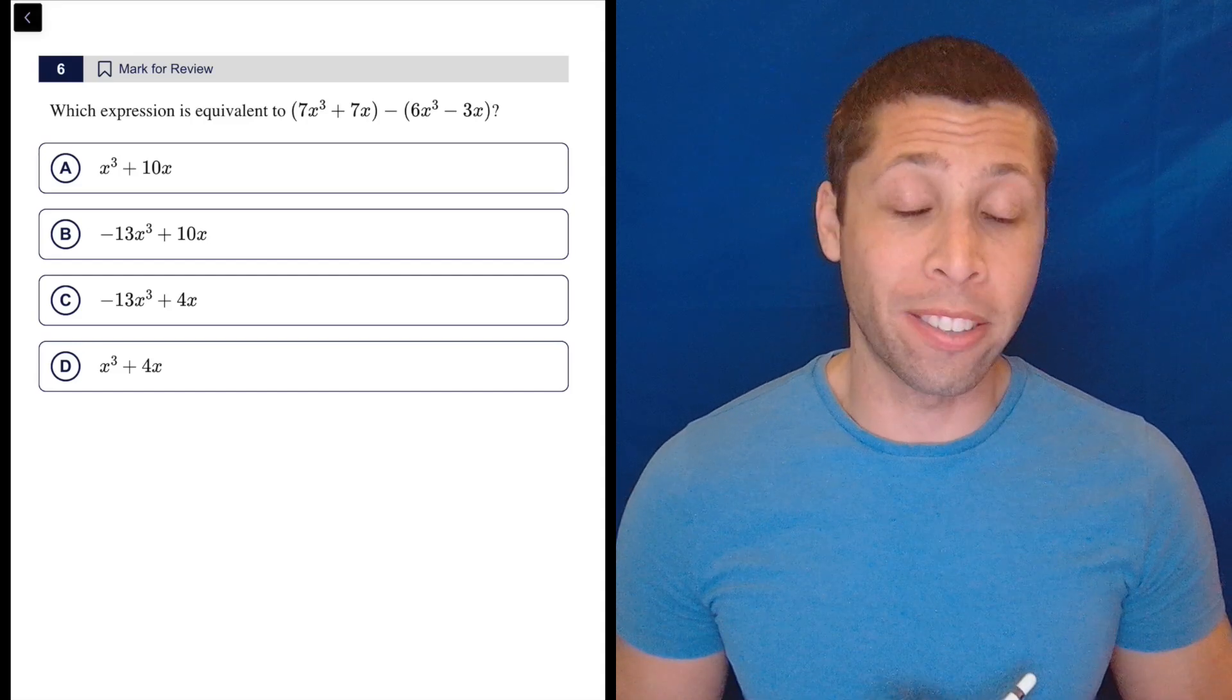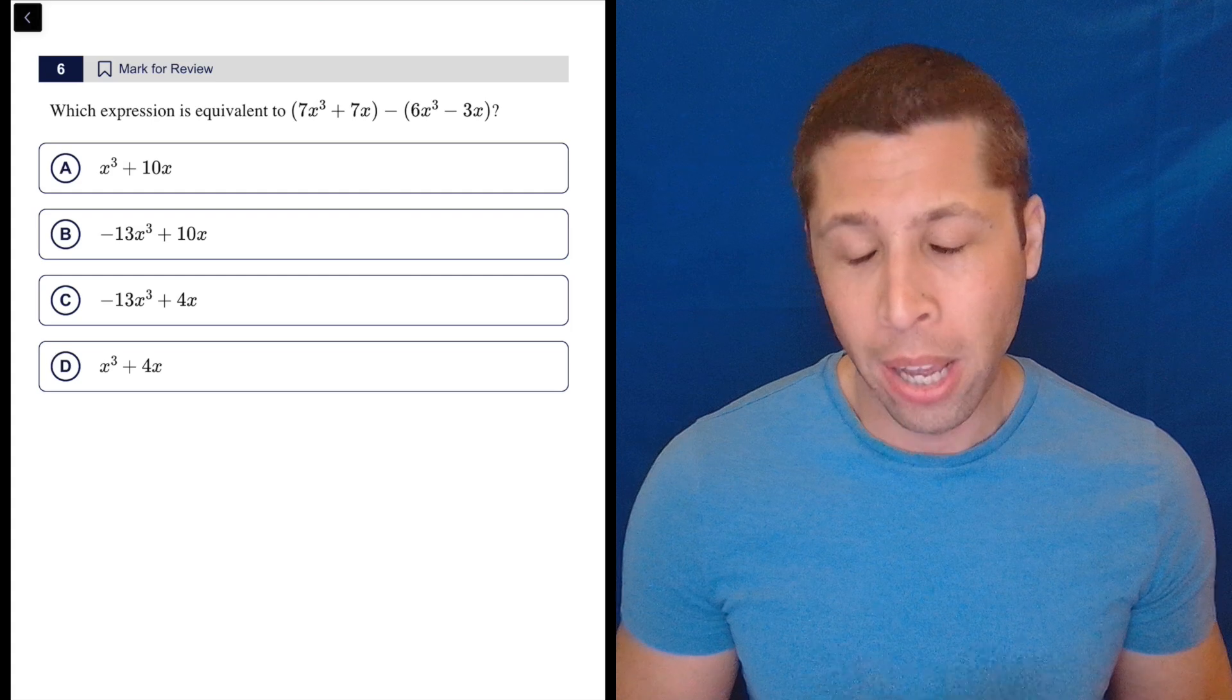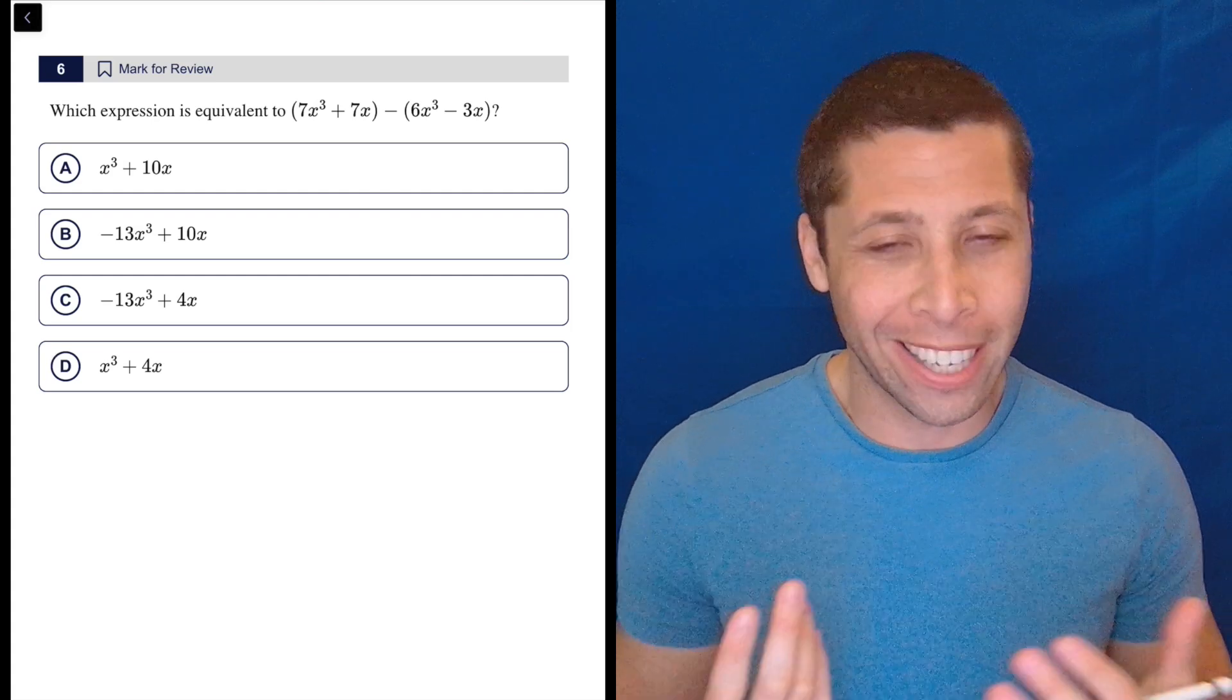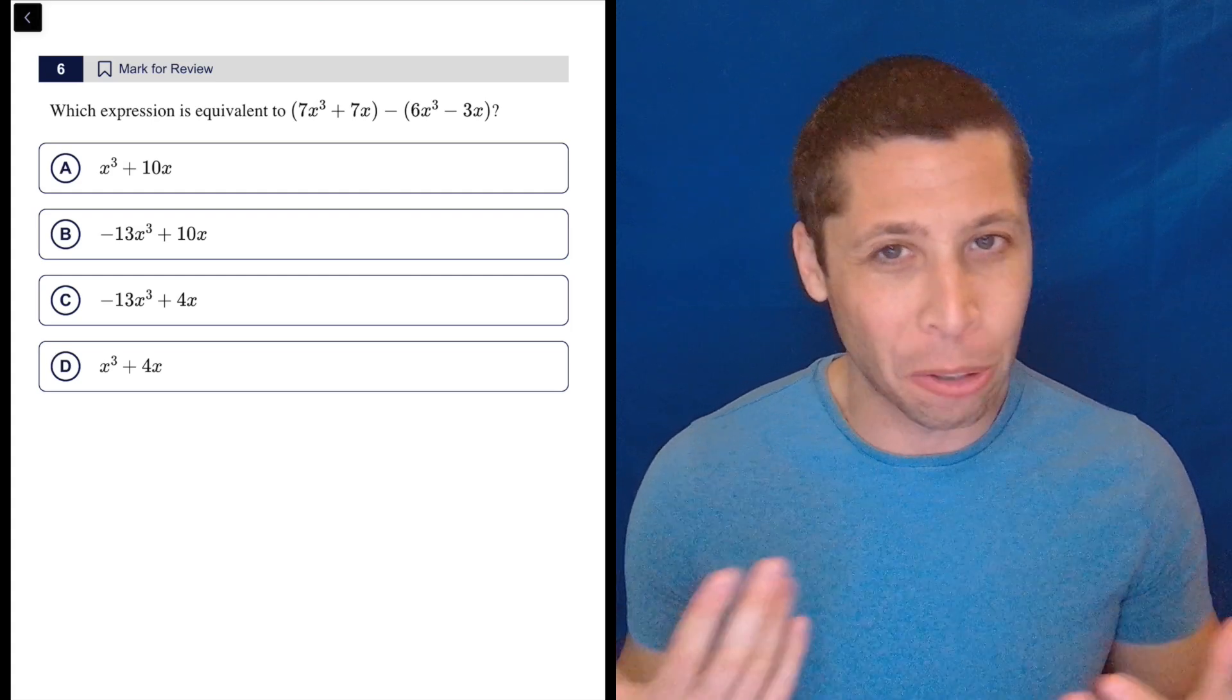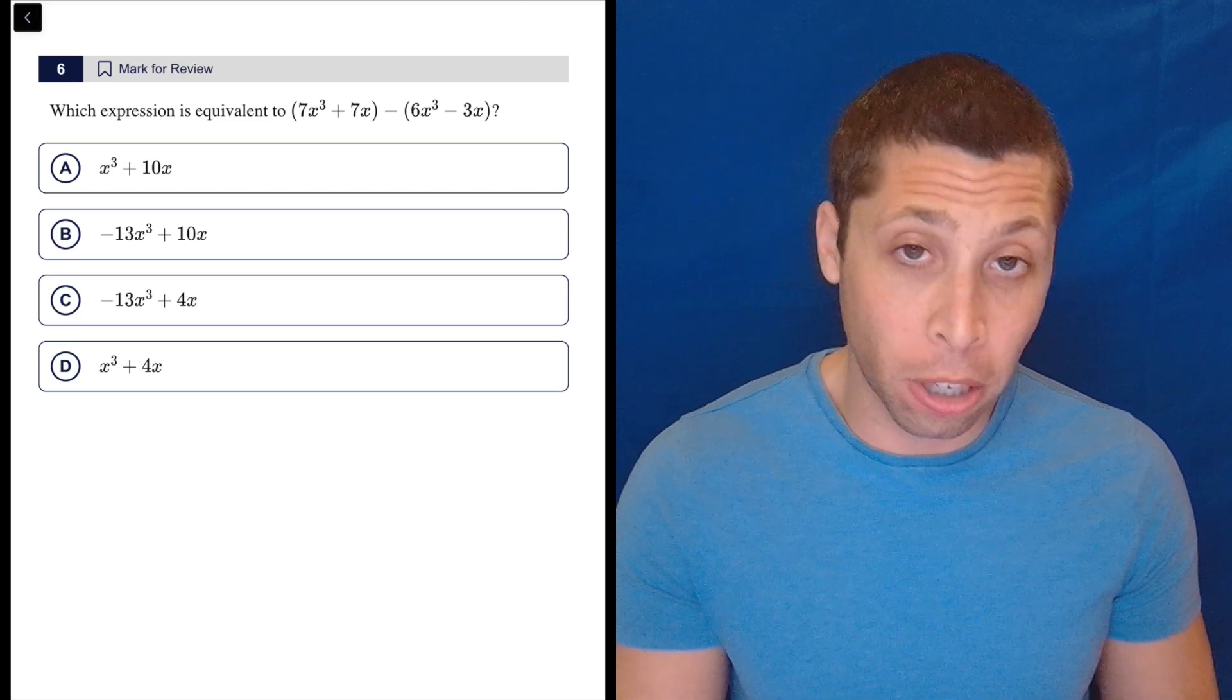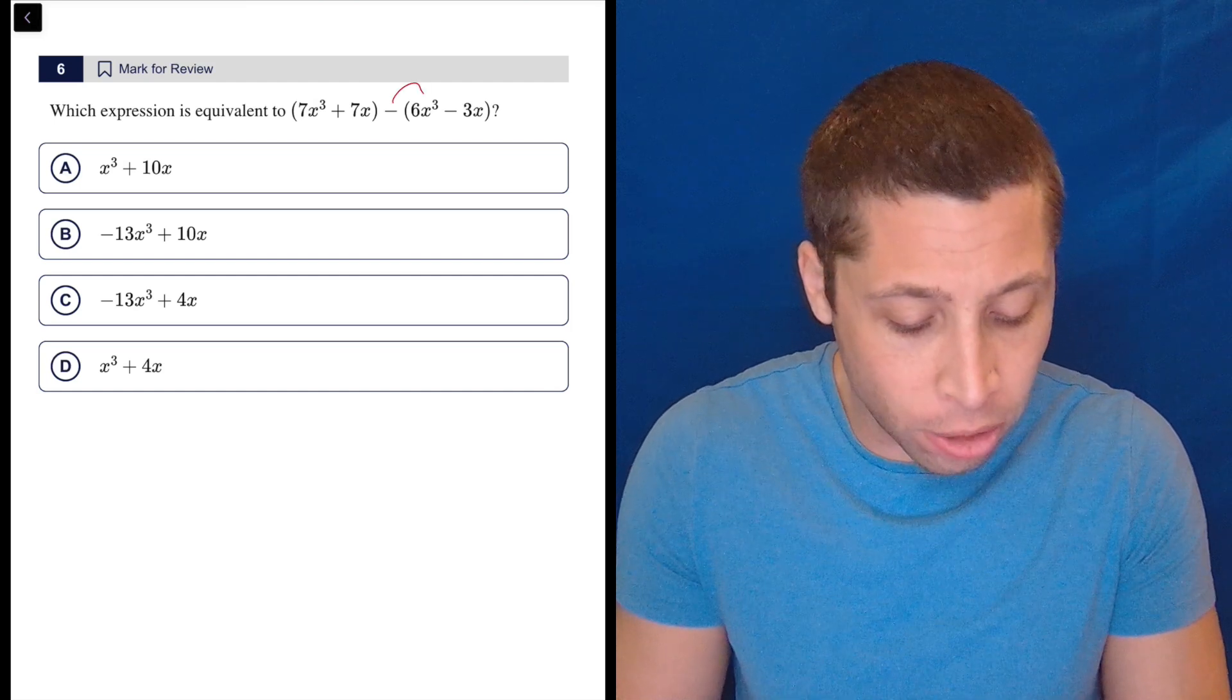This is a question where my immediate thought is I could arithmetize. They don't ever ask me to solve for x, so I could make up a value. But this is not particularly hard, so you really don't want to be doing that kind of long work here. You really should just be able to see that it's about combining like terms and that the one trick they're hoping you miss is that we have to distribute this negative.